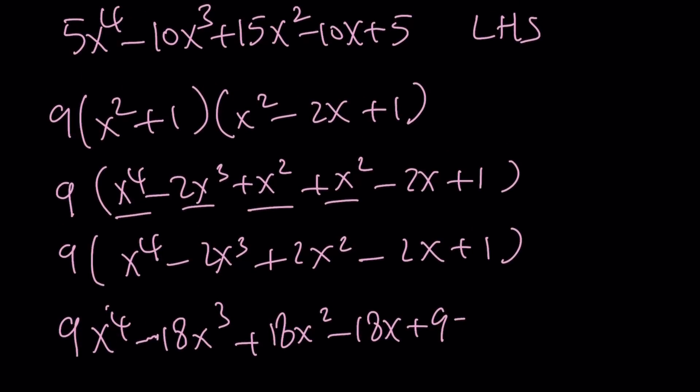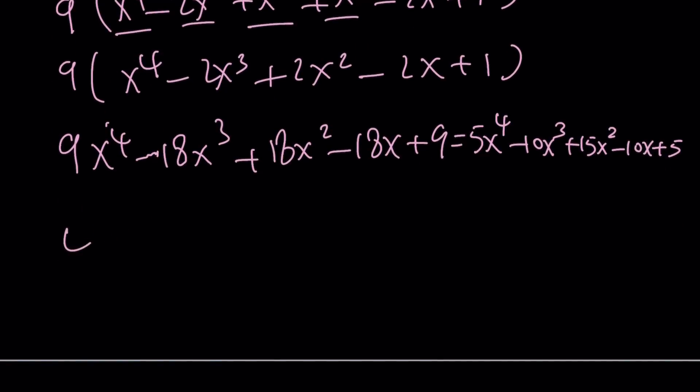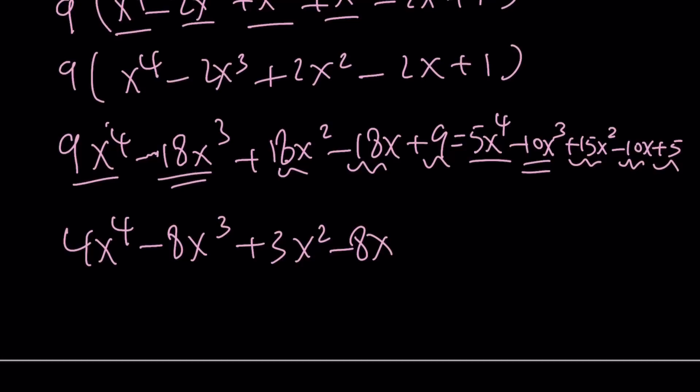We could write this on the right hand side: 5x to the fourth minus 10x cubed plus 15x squared minus 10x plus 5, and put everything on the same side. 4x to the fourth, these two combined: negative 18 plus 10 is negative 8x cubed, 18x squared minus 15x squared is positive 3x squared, negative 18 plus 10 is negative 8x, and finally 9 minus 5 is positive 4.